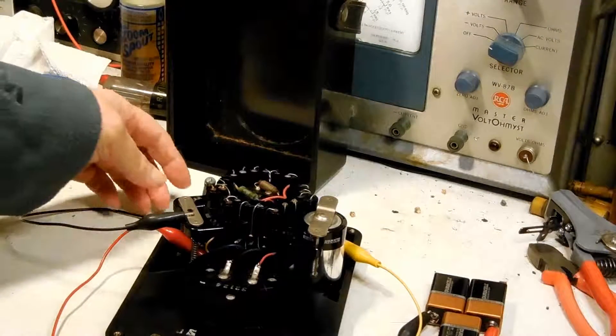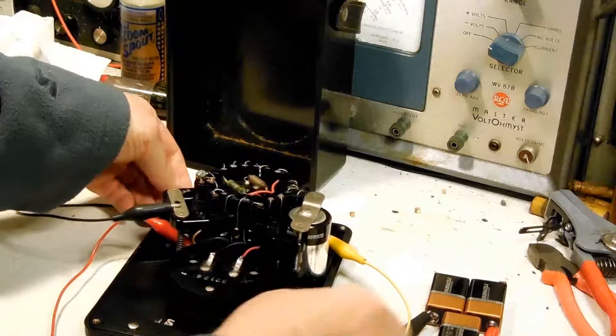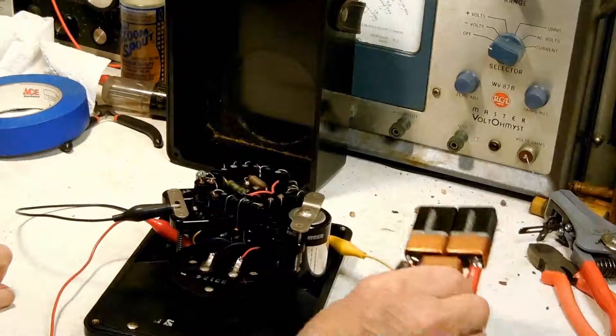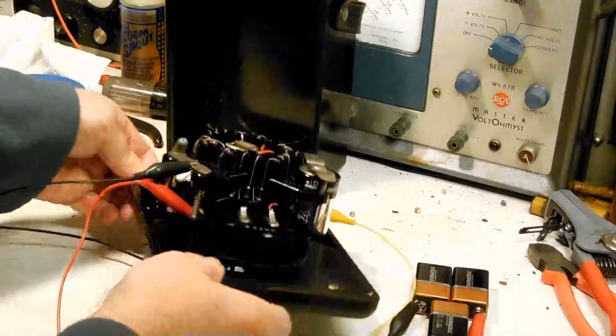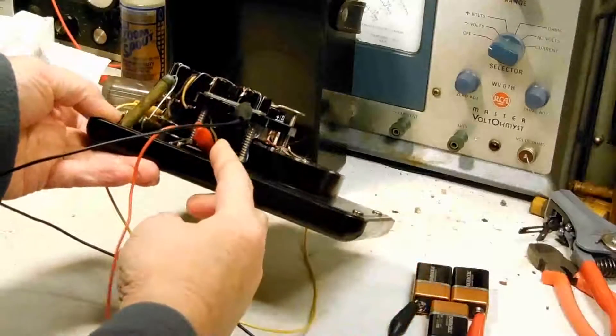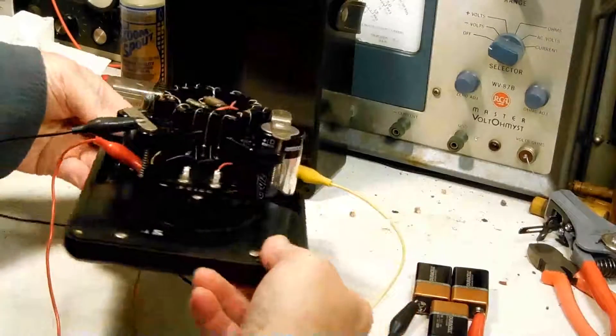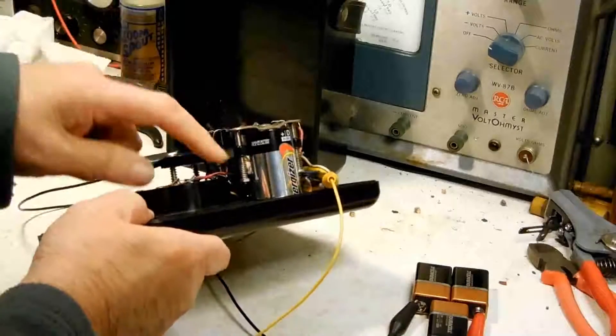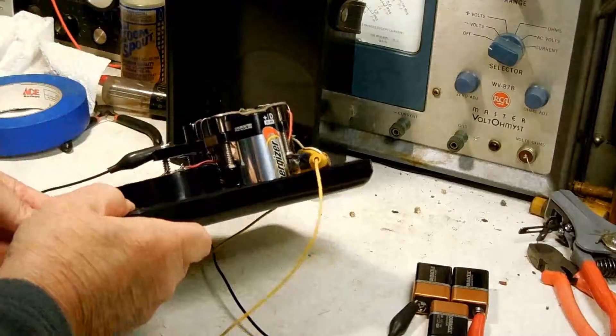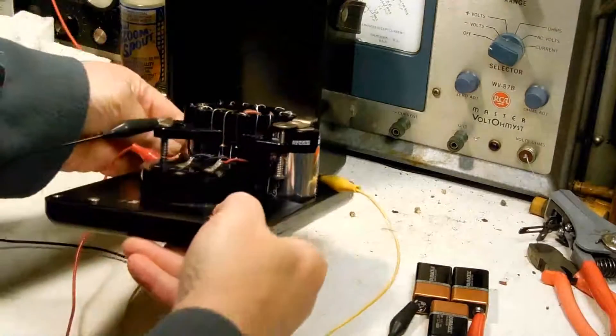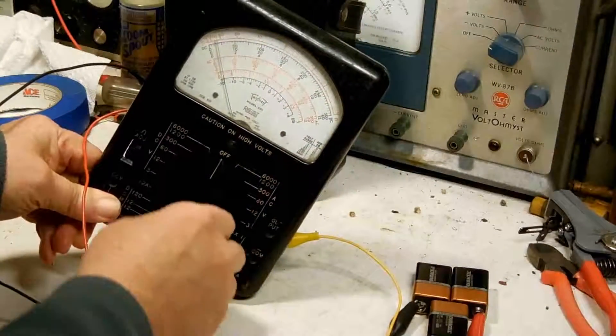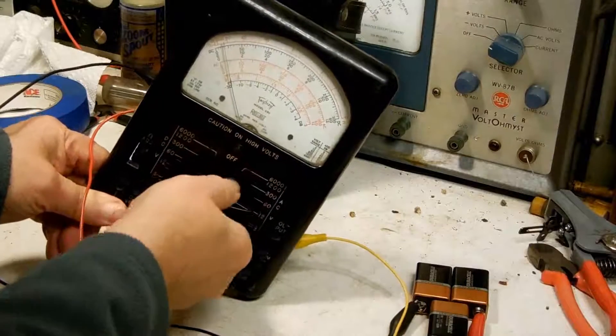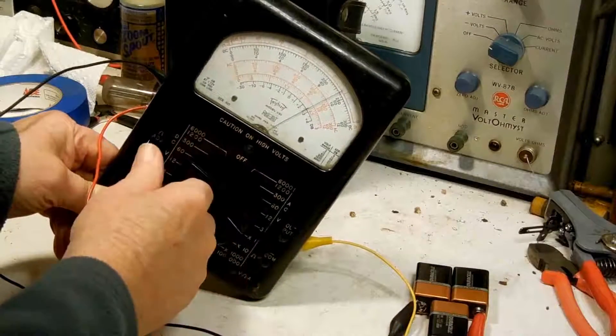Okay, I've got the batteries hooked up. I've got three 9-volt batteries hooked up right here and I've got the 1.5-volt battery plugged in. So let's see here, let's set this down to ohms.